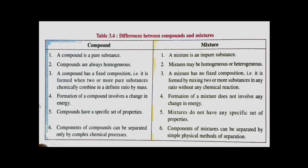Differences between compound and mixture: a compound is a pure substance, whereas a mixture is an impure substance. Compounds are always homogeneous, but mixtures may be homogeneous or heterogeneous. A compound has a fixed composition because components chemically combine in a definite ratio by mass, giving it a fixed formula. A mixture has no fixed composition — it is formed by mixing substances in any ratio without any chemical reaction between components.